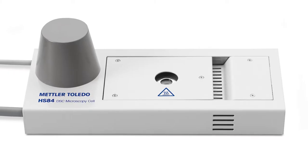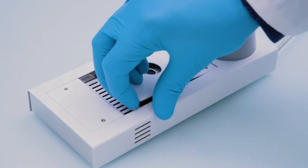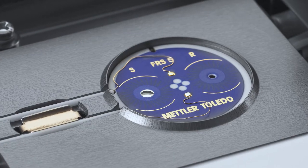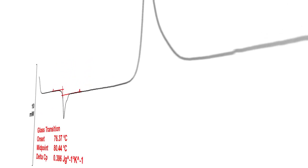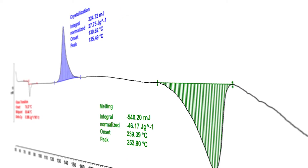The hot stage system HS84 is a fully functional DSC which simultaneously offers temperature control, visual observation, and measurement of a heat flow curve. This enables detection of thermal effects even with the small samples required for visual observation.